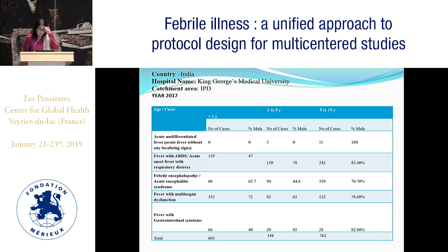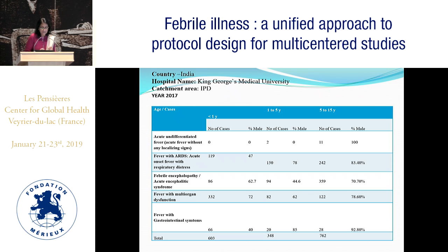When asked how many acute undifferentiated fever cases we have, in our admissions we have only admitted a very small number — 10 to 11 cases so far — with a large male sex predominance. A couple were positive for parvo by PCR; parvo load was done and they were managed accordingly. For fever with respiratory distress, febrile encephalopathy, acute encephalitic syndrome, and fever with multi-organ dysfunction were picked up as sepsis from the case records.